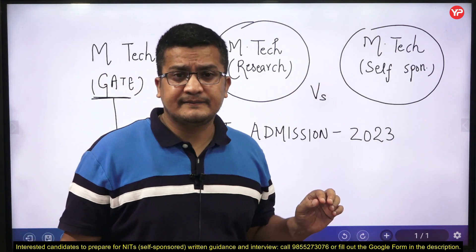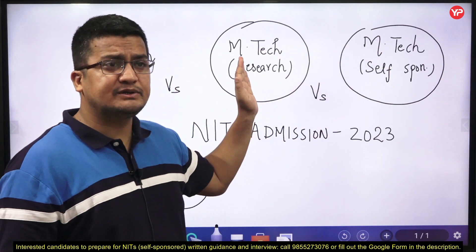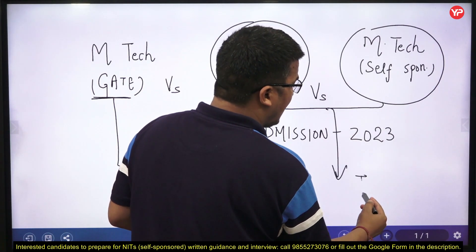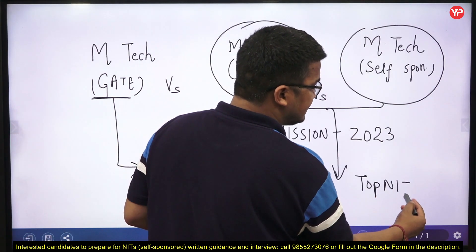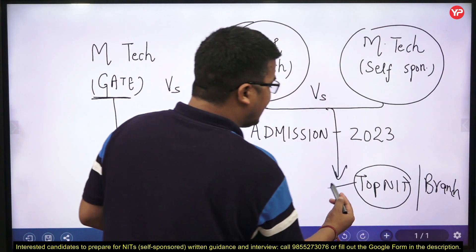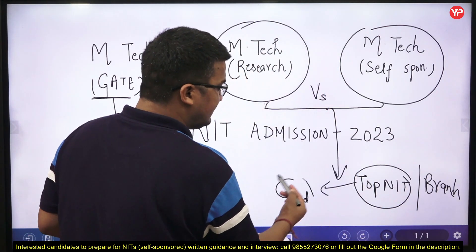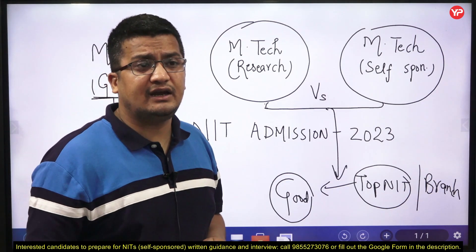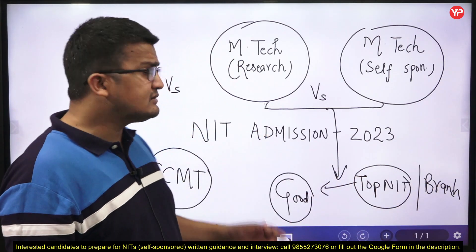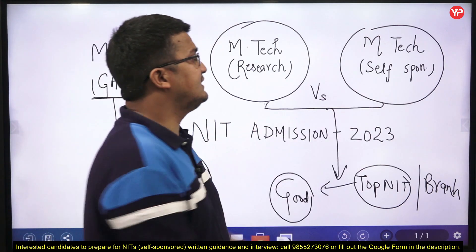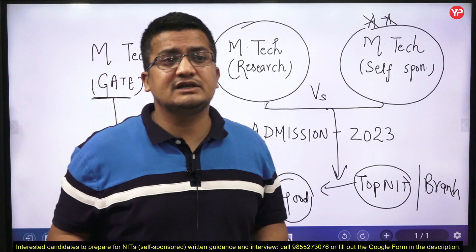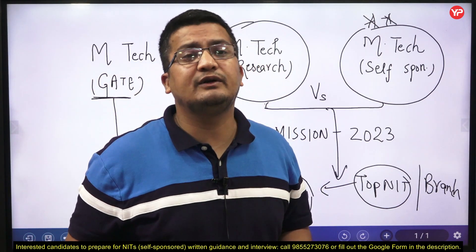All are really great opportunities, especially M-Tech through GATE and M-Tech research — these two opportunities are really great for students who want to get into top NITs and get top branches and good placements. Obviously, if your GATE score is very low or you are not GATE qualified, then this option is a bit difficult for top NIT, top branch, and top placement — you need to sacrifice somewhere. But the self-sponsored option is really great for that. Choose your option wisely, and if you need any kind of consultation, feel free to connect with us. Thanks a lot.